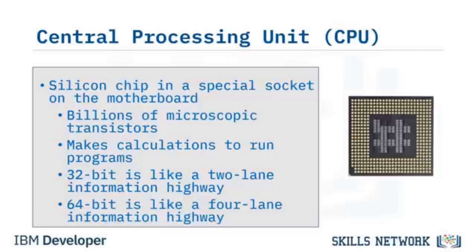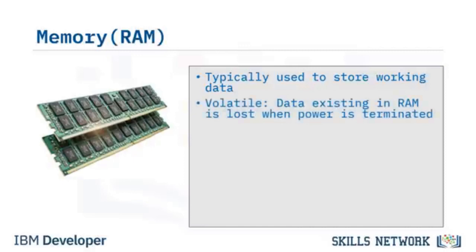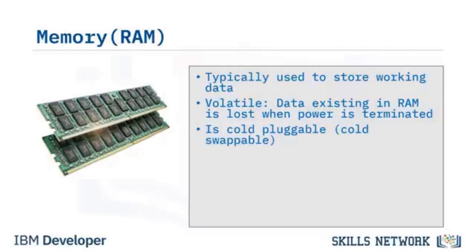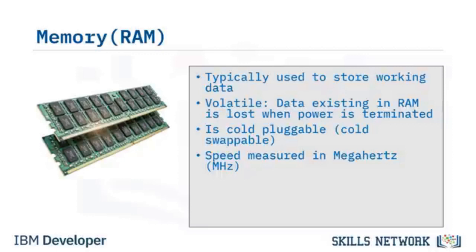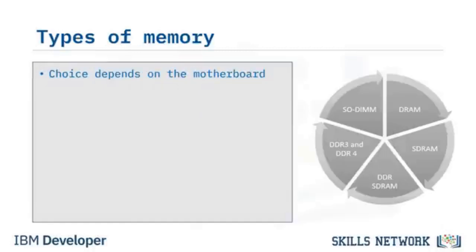A 64-bit CPU is comparable to a four-lane information highway, enabling twice the amount of data to move compared to a 32-bit CPU. Random Access Memory, or RAM, temporarily stores working data and machine code. Because RAM is volatile, any data in RAM is lost when power is terminated. RAM is cold-pluggable or cold-swappable, meaning the hardware is off or without power. RAM speeds are measured in megahertz, currently ranging from 1333 megahertz to 2133 megahertz. RAM is available in several forms of varying speeds and storage capacities depending on your motherboard type.